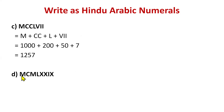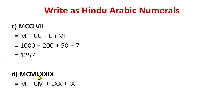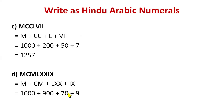Let's do MCMLXXIX. Split it: M, then CM (1000−100 = 900), then LXX (50+10+10 = 70), then IX (9). So M is 1000, CM is 900, LXX is 70, IX is 9. The answer is 1979.